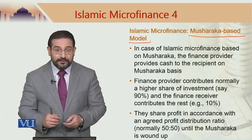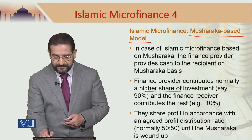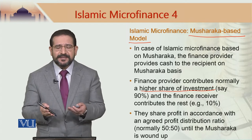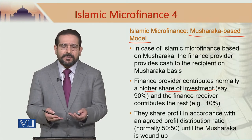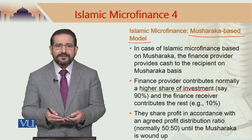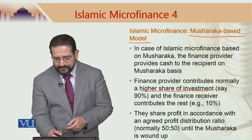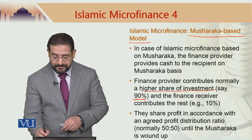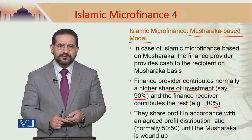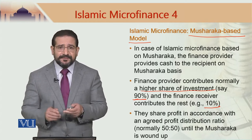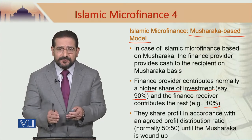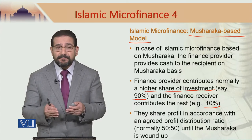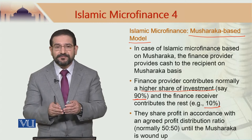The finance provider normally contributes a higher share of investment, because the finance recipient — the other partner — is actually quite poor. His predicament is that he does not have money. So a 50-50 arrangement would not be attractive for the finance recipient. Normally the microfinance provider on the basis of Musharakah would provide 90 percent of the money required to do the business, and the remaining 10 percent — a nominal amount — is provided by the finance recipient. This structure is used instead of Mudarabah because the Islamic microfinance company may want to have some kind of commitment from the finance recipient.